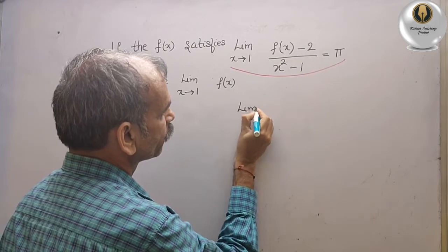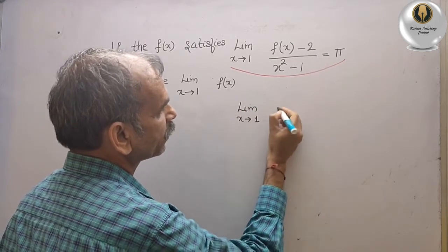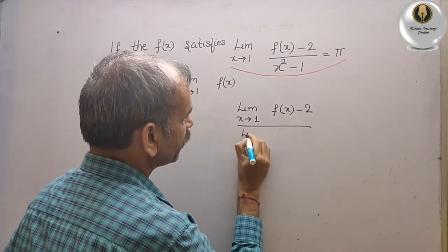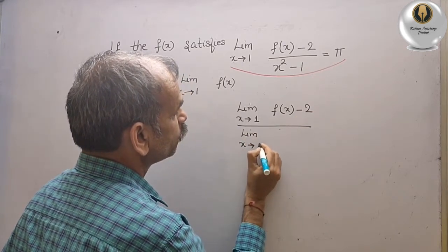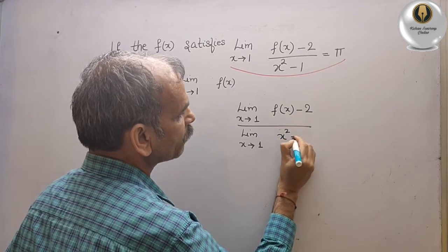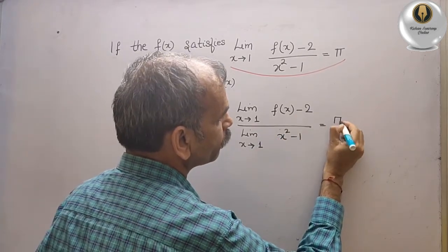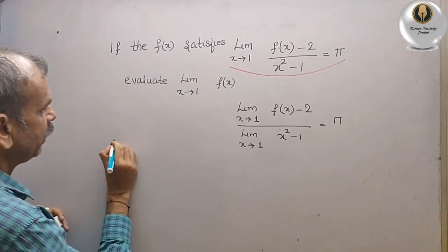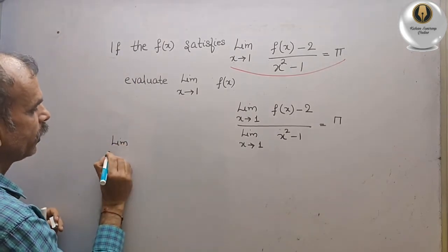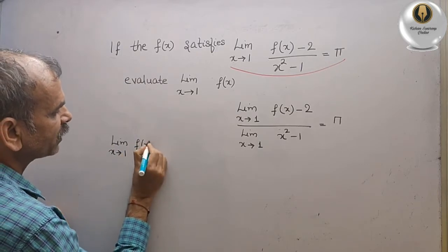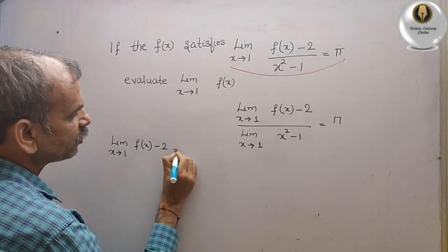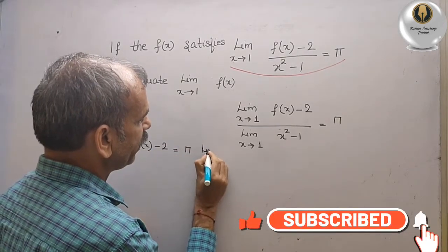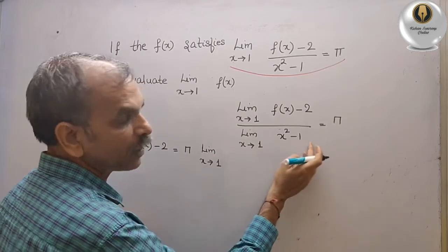Limit x tends to 1, f(x) minus 2 by limit x tends to 1, x square minus 1, that is equal to pi. Now cross multiply it. What we will get? We get limit x tends to 1, f(x) minus 2, that is equal to pi. Pi is the constant, we will take it out, and here what is limit x tends to 1, x square minus 1.